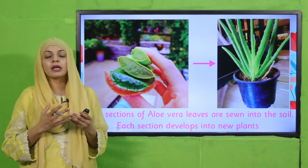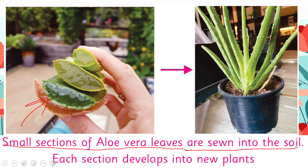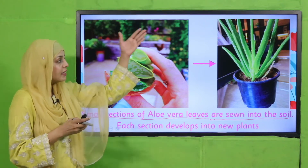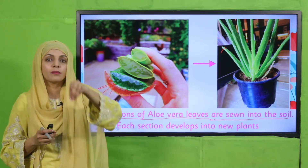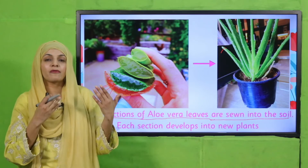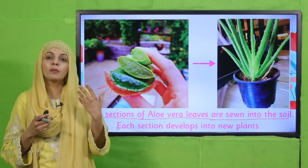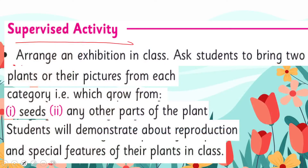Aloe vera leaves also have the ability to grow into a new plant. These are small sections of aloe vera leaves, and when they are sewn into the soil, each section develops into a new plant. If you put these sections into the ground, each section is able to produce a new plant. You take one leaf, cut it into small portions, put them into the soil, and after a few weeks you will notice that each section will grow into a new plant.